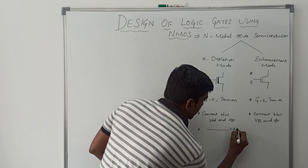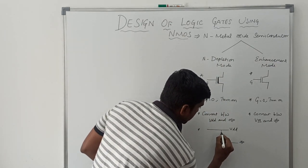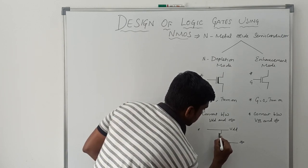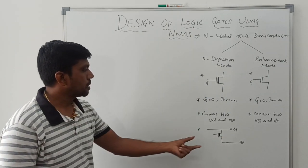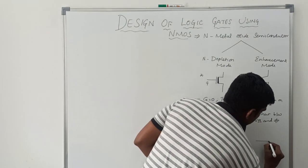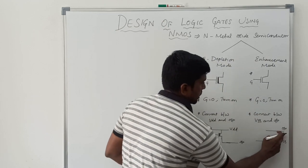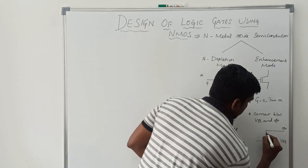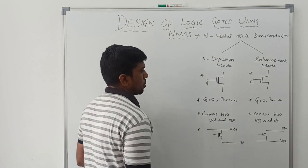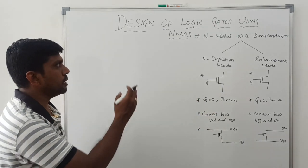This line is VDD and this line is the output. The depletion mode transistor is connected between VDD and the output line. The enhancement mode transistor is connected between VSS and the output. Using these steps, I am now going to design the NOT gate using NMOS.